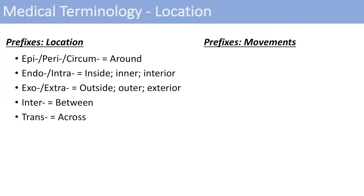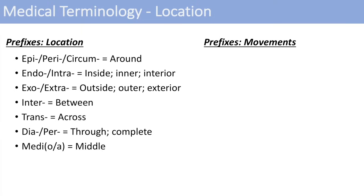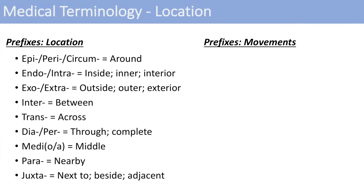Trans means across — think transmembrane or transatlantic. The prefix dia or per means through or complete — think of diameter or perforate, something that goes through. Medi, medio, or media means in the middle. Para means nearby. And juxta means next to, beside, or adjacent — just think of juxtaposition, putting things beside each other.